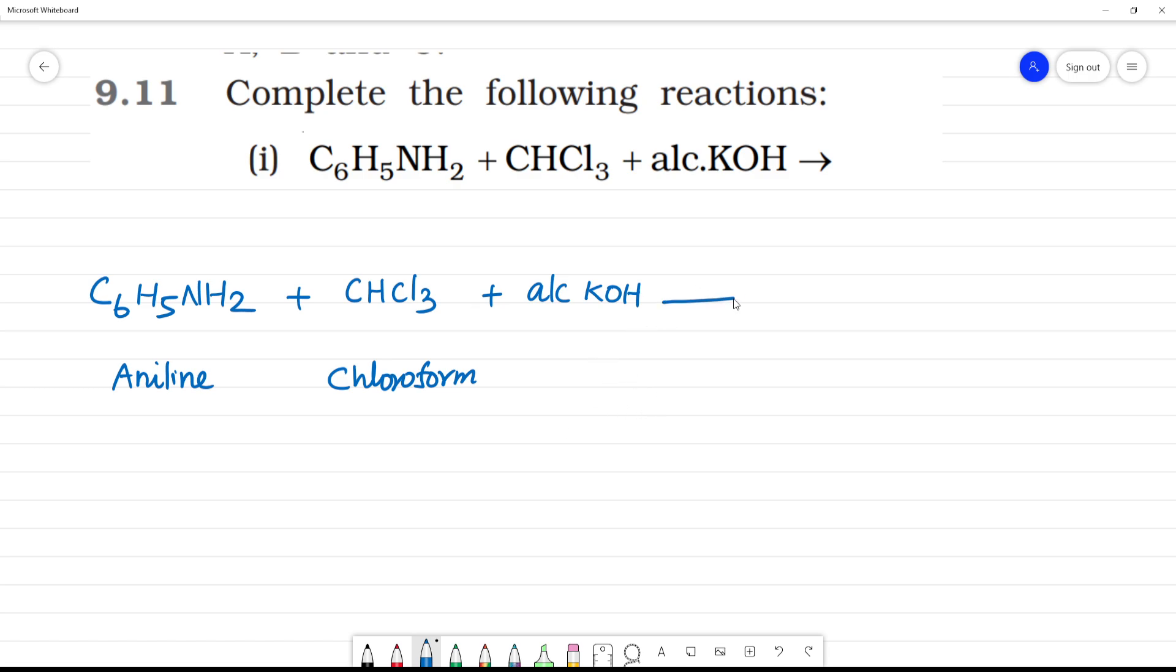So this is an exceptional reaction. We will be getting isocyanide. C6H5NC. NC, N and C have a triple bond. N and C. Usually, CN is cyanide. This is NC, so it's isocyanide.